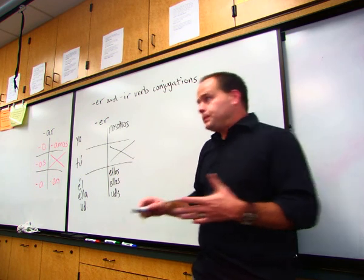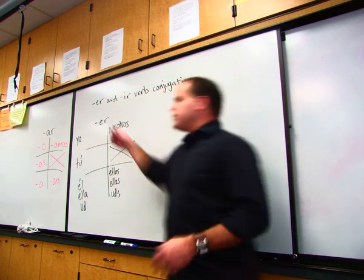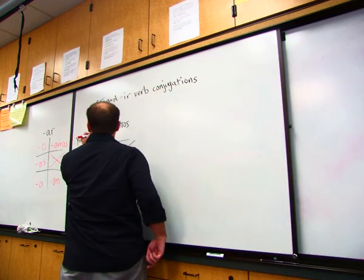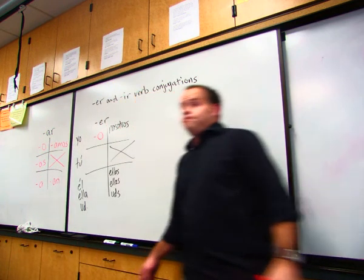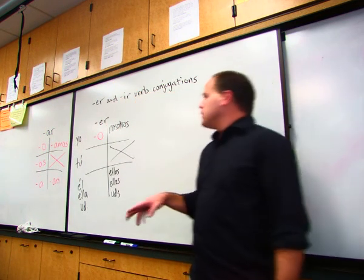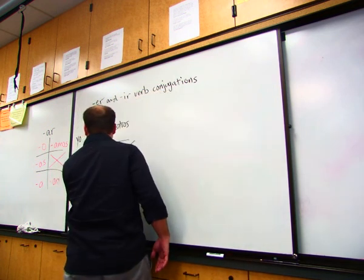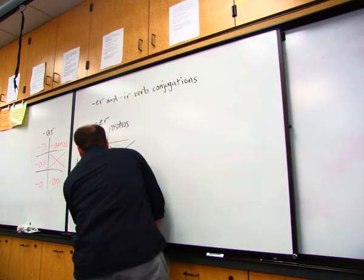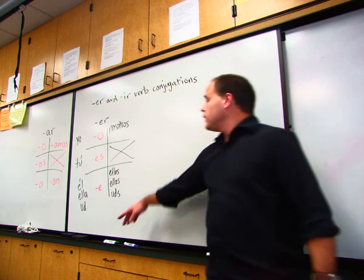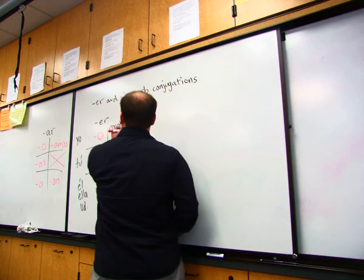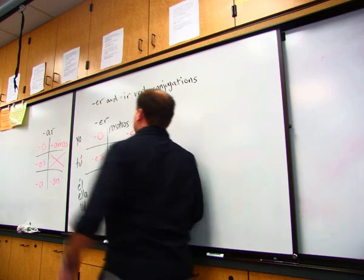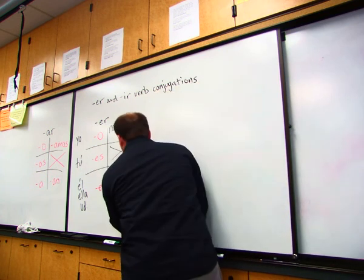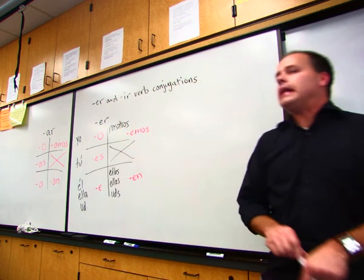On a regular ER verb, and I say regular because the regular verbs will follow this pattern, you drop the ER, and in the yo form what are you going to add? Any ideas? O. In the tu form you're going to drop the ER and you're going to add ES. In the el, ella, usted form you're going to drop the ER and add E. In the nosotros form you're going to drop the ER and you're going to add EMOS. And in the ellos, ellas, ustedes form you're going to drop the ER and add EN.